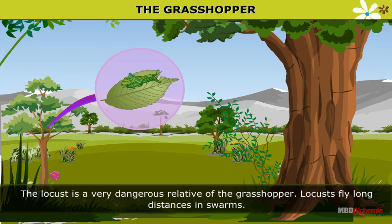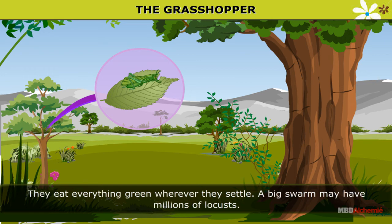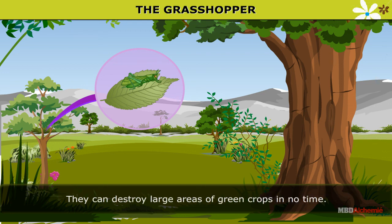Locusts fly long distances in swarms. They eat everything green wherever they settle. A big swarm may have millions of locusts. They can destroy large areas of green crops in no time.